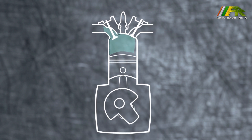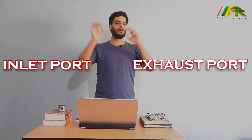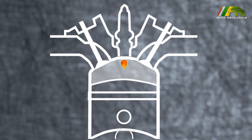The piston moves down, the inlet port opens, and then due to the vacuum created by the piston, the air rushes into the cylinder — just like when you suck in water with a syringe. Now when the piston moves up again, the inlet and exhaust ports are closed and the air is compressed because it has nowhere to go. Here the compressed air has petrol or diesel mixed in it, and we are at the same point where we started this process.